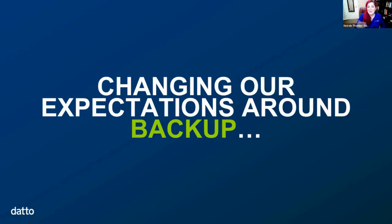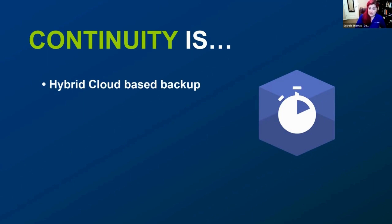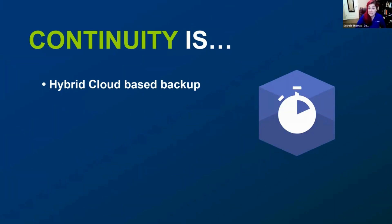For business continuity, talking about the RPO and RTO calculator — if you have to roll back and it takes you a week, two weeks, three weeks, four weeks to roll back to the previous version, that's not continuity, because you're going to lose a whole bunch of business during that time. Continuity is your hybrid cloud-based backup. You need to have not just cloud — you need a local copy and a cloud base, and a secondary cloud base. Because if something really bad was to happen and you had all your data stored in a data center in Toronto and that building caught fire, all that data is gone.